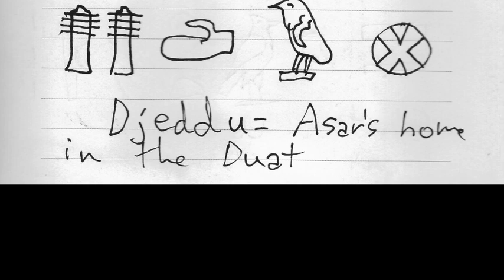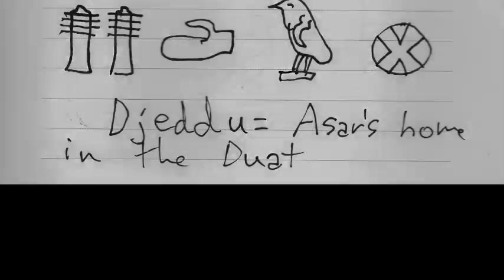And this is the word for Jed Dou: Jed, two Jed Pillars, a D, the little mitten, and the quail chick — Jed Dou.